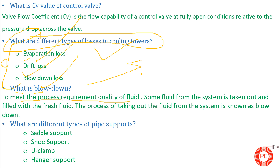The next question is: what is blowdown? Blowdown is the removal of water whose quality does not meet the system requirements. This water is removed periodically from cooling towers and boilers. When water quality does not match system requirements, it is removed and the system is replenished or refilled with fresh water. This process of removing poor-quality water from the system is known as blowdown.